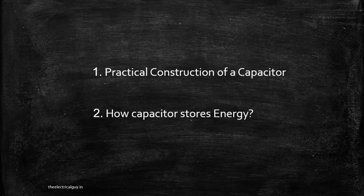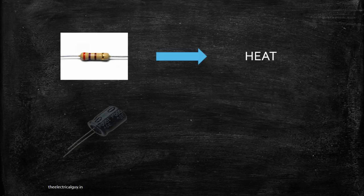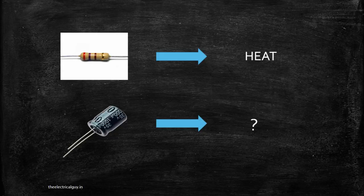We know that when current passes through a simple resistor, it dissipates as heat. But when current passes through a capacitor, something different happens — it acts differently. Let's see how.